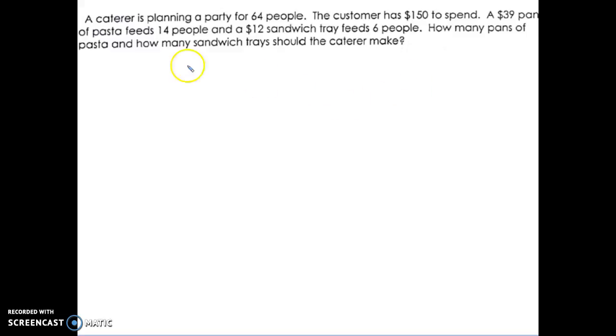So again, the question says how many pans of pasta and how many sandwich trays should they make. So those are our variables. You can pick anything you want. I'm going to pick P for pasta and S for sandwich.